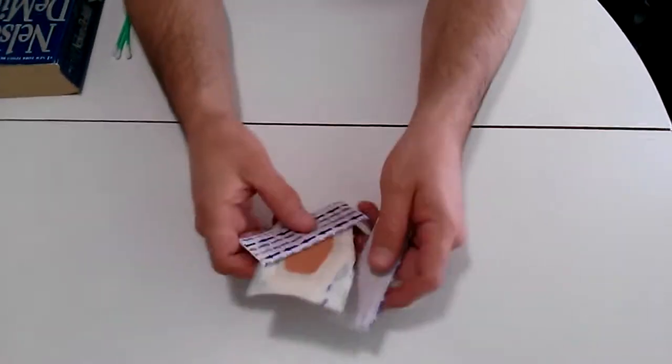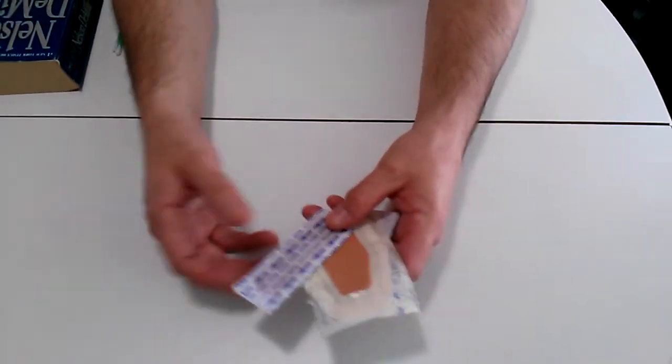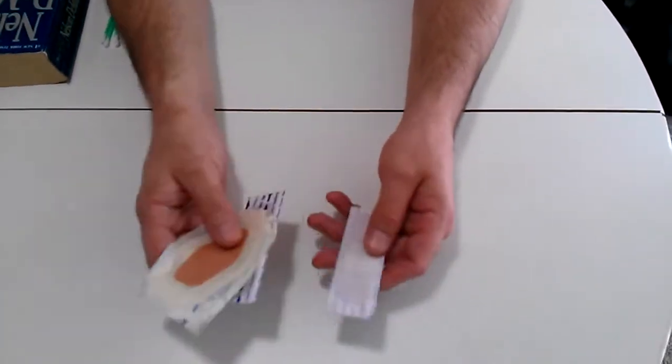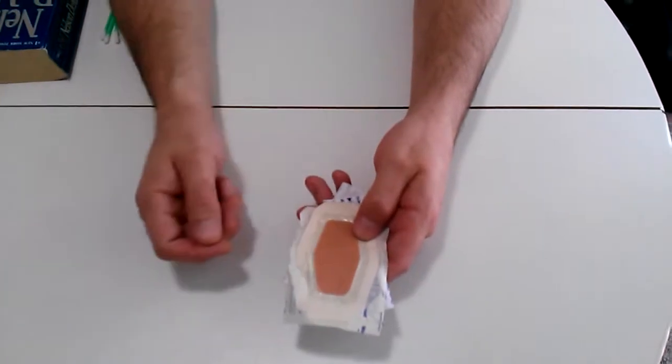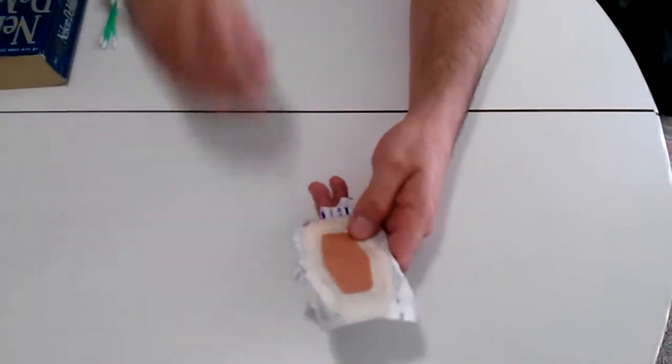Also came across some band-aids. Now I do plan on getting a first aid kit that's small and compact with more stuff in it, but for now, again, just things around the house. I have some band-aids, so those are going to go in the bag for now. This one happens to be waterproof, which is pretty cool.